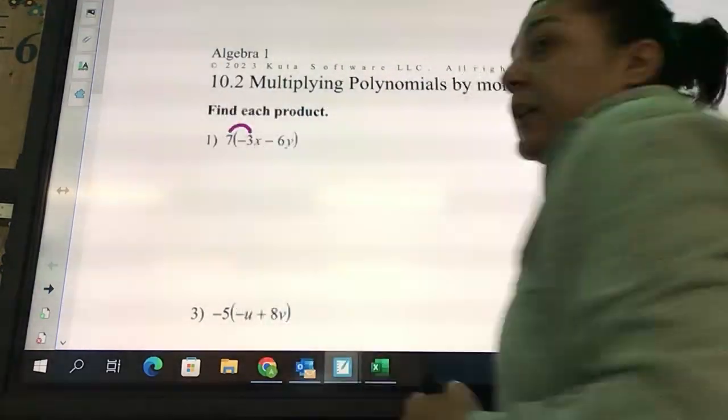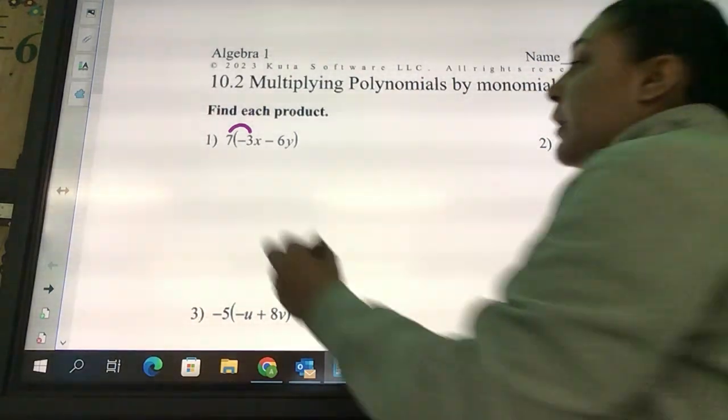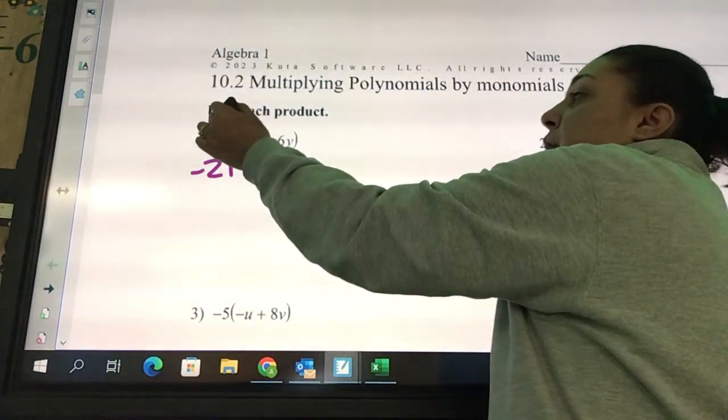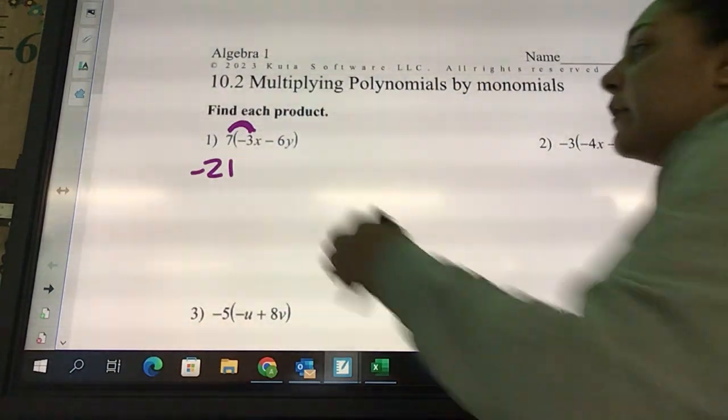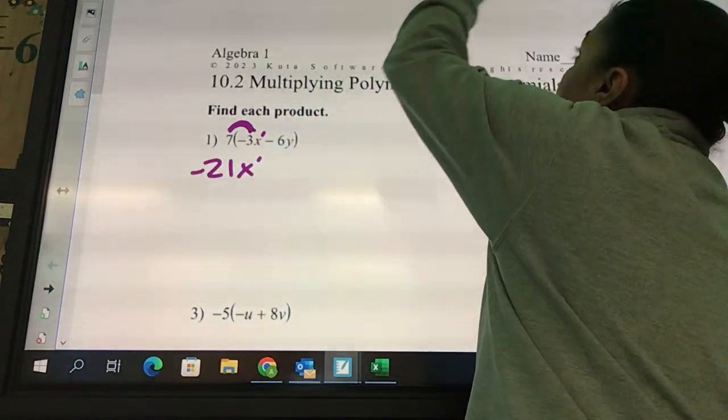Seven times negative three is negative 21. And then looking from this term to this one, how many x's are there? Just one, so we're going to say x to the first or just x.